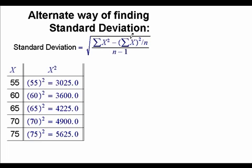And the formula says we're going to add up the x's, the sum of the x's right here. And to do that, we're just going to add up these numbers. So after we add them all up, to get 325. And if we add up the other numbers, the 3025, the 3600, and so forth and so on, we're going to get 21,375.